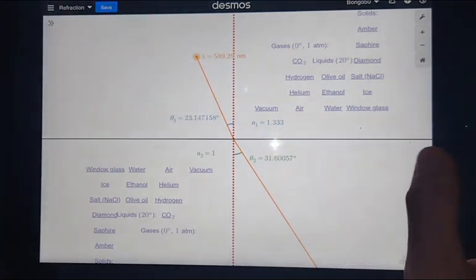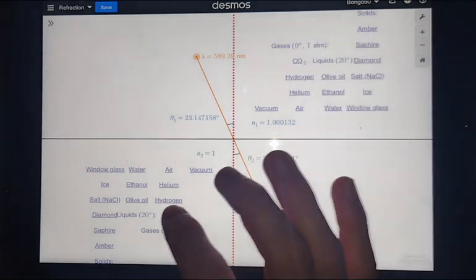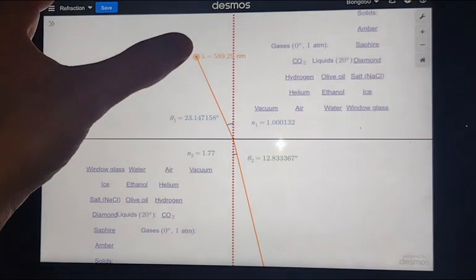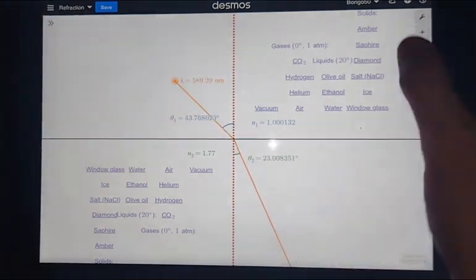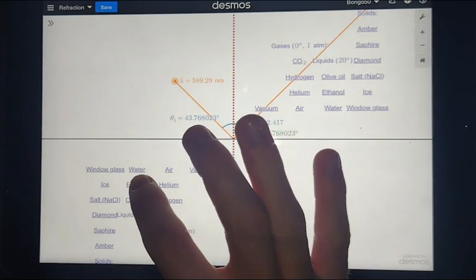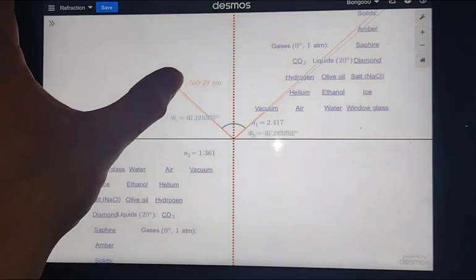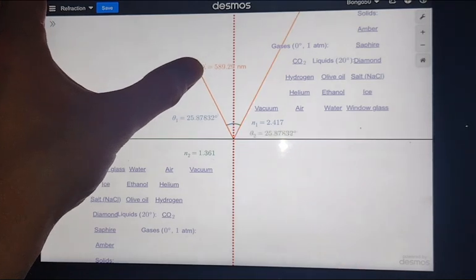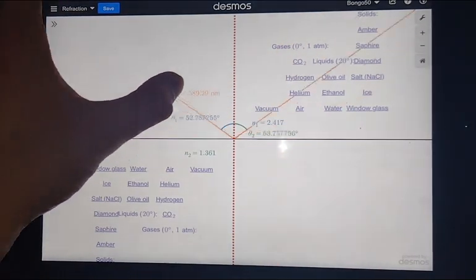You can select other materials, so I could go from hydrogen into sapphire if I wanted to, or I could go from diamond into ethanol. You can see here the critical angle is really quite small, so we don't get much refraction before we enter total internal reflection.